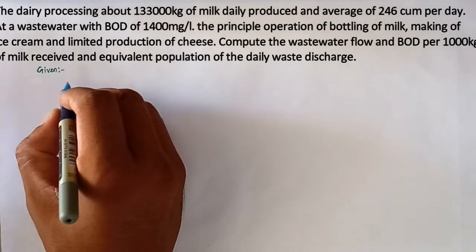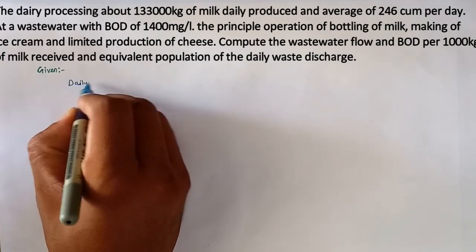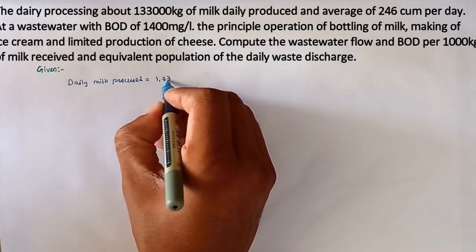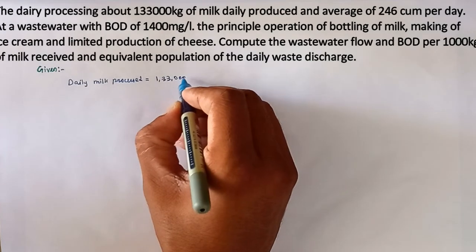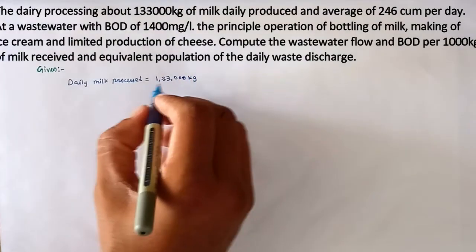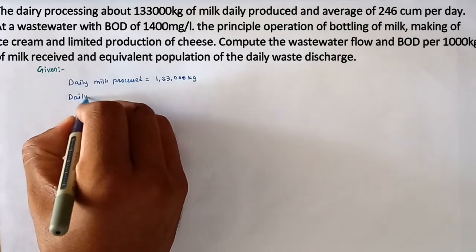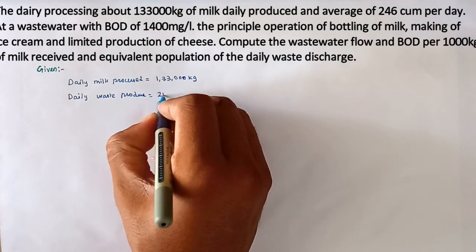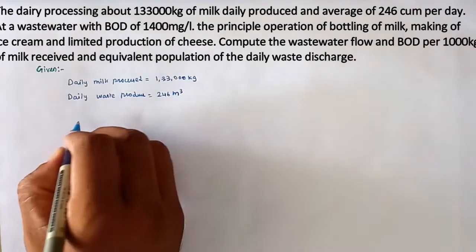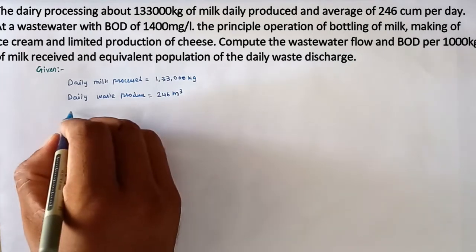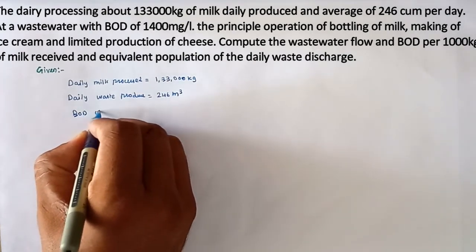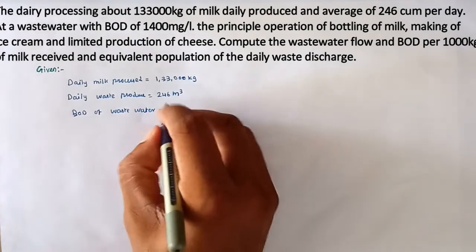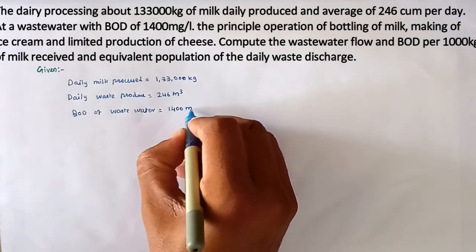The given values are: daily milk processed is 133,000 kg of milk. Daily waste produced is 246 cubic meters. BOD of wastewater is equal to 1400 milligrams per liter.